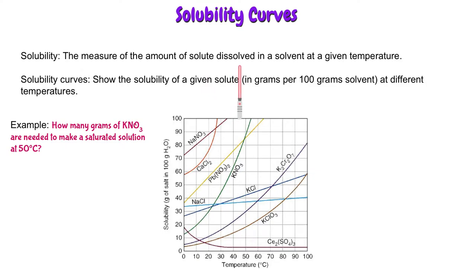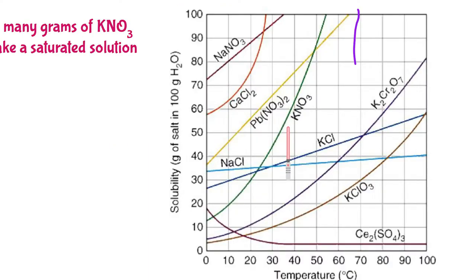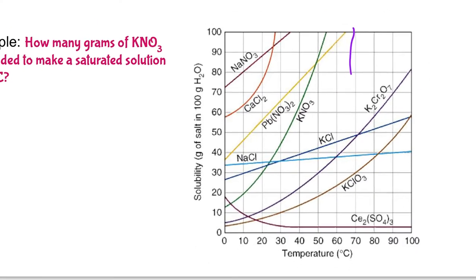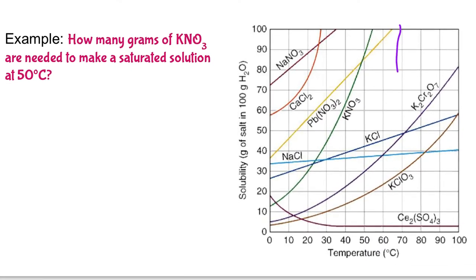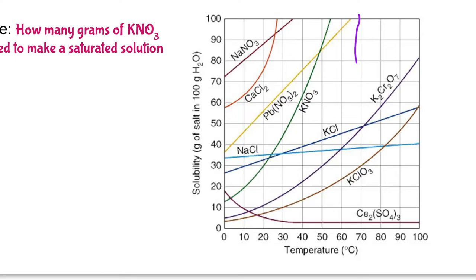Solubility is the measure of the amount of a solute dissolved in a solvent at a given temperature. Solubility curves show the solubility of a given solute in grams per 100 grams of solvent at different temperatures. For example, how many grams of KNO3 are needed to make a saturated solution at 50 degrees Celsius? First, we need to find the curve for KNO3, which is the green one. Along the curve at a given temperature, you can match the temperature to the y-axis to find how many grams of solute.